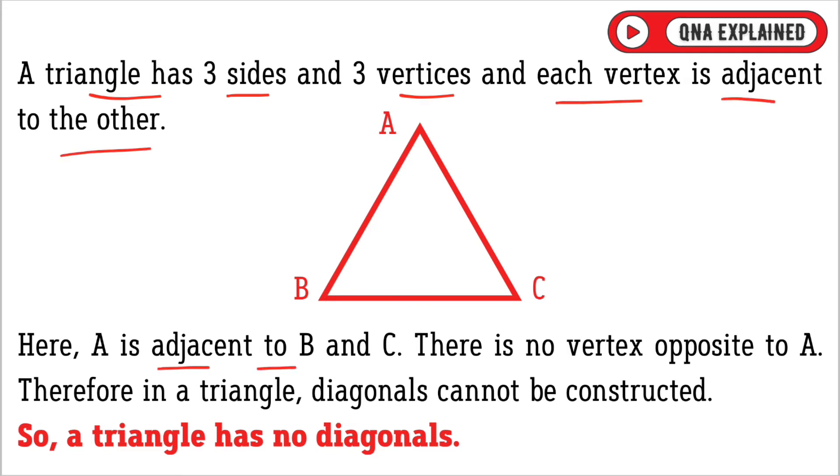Here, A is adjacent to B and C, there is no vertex opposite to A.